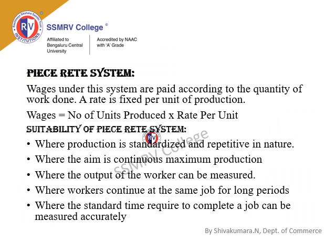The second method is the Piece Rate System. Wages under this system are paid according to the quantity of work done. A rate is fixed per unit of production. Wages = Number of units produced × Rate per unit. It is suitable where production is standardized and repetitive, where maximum continuous production is the aim, where output can be measured, where workers continue on the same job for a long period, or where standard time to complete a job can be accurately measured.